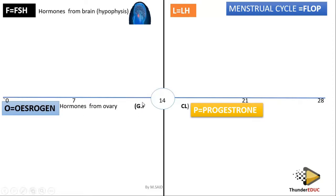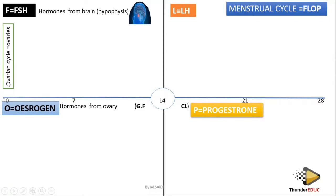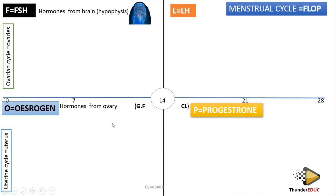Estrogen is produced from the Graafian follicle, while progesterone is produced from the corpus luteum. The upper portion of this diagram is the ovarian cycle — controlled by follicle-stimulating hormone and luteinizing hormone. The lower portion is the uterine cycle. The ovarian cycle occurs in the ovary, while the uterine cycle occurs in the uterus.